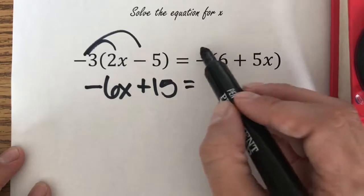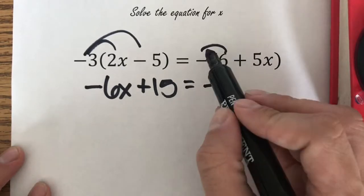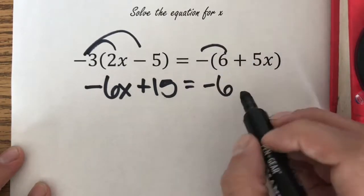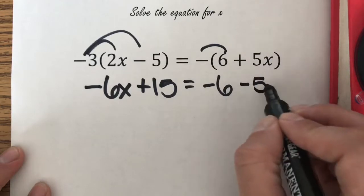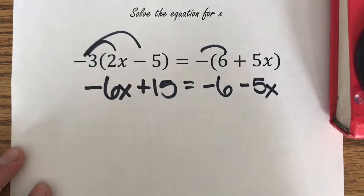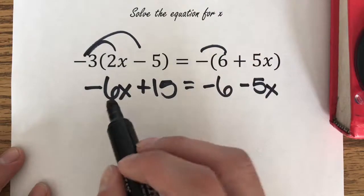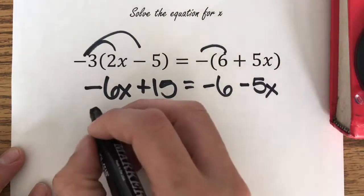Negative times 6 is negative 6. Negative times positive 5x is negative 5x. Now what we have to do is get rid of one of these x's because there's an x on the left and an x on the right.